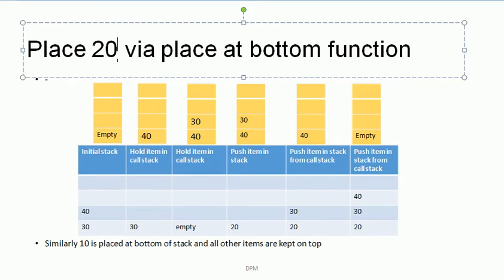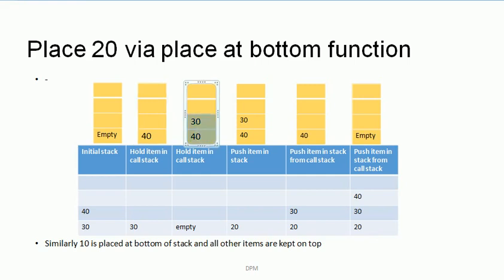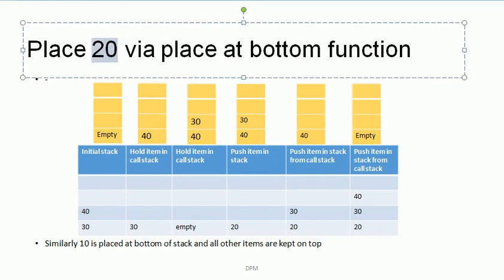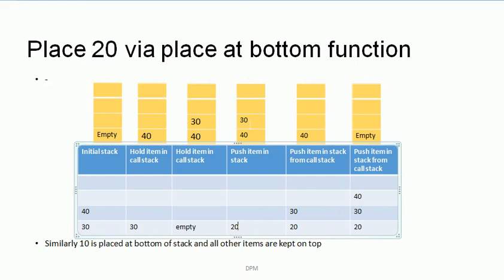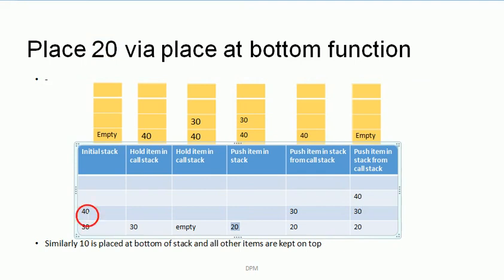Now 20 comes from the function call to B. At that time the stack is 40, 30. What Function B will do first is take all items into its call stack one by one — 40, then 30 — so when the stack becomes empty, the new item is placed onto the stack. Now in the reverse process, 30 is pushed back, then 40 is pushed back. So Function B pushes 20 at the bottom of the stack while keeping items 40 and 30 on the top in the same order they were previously.